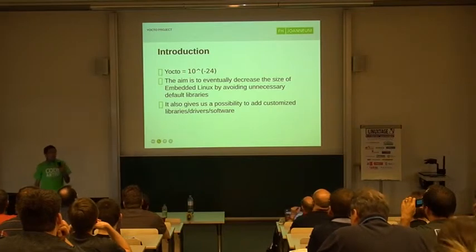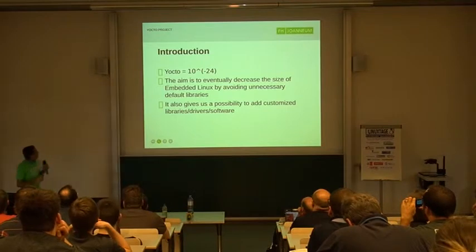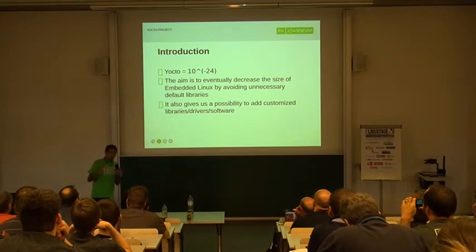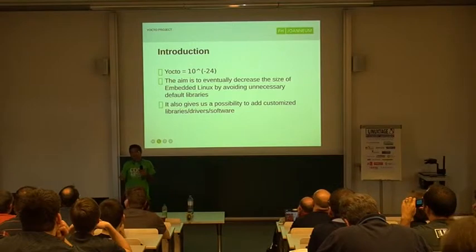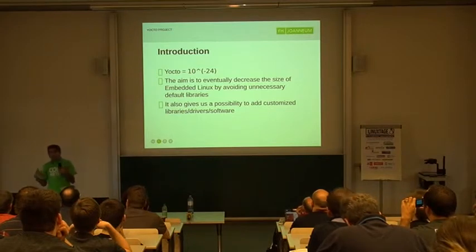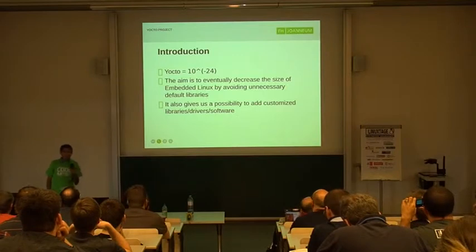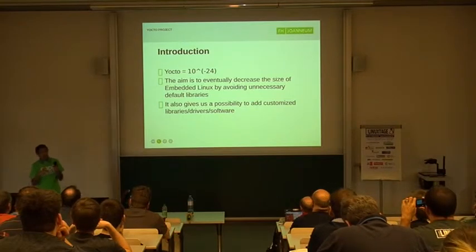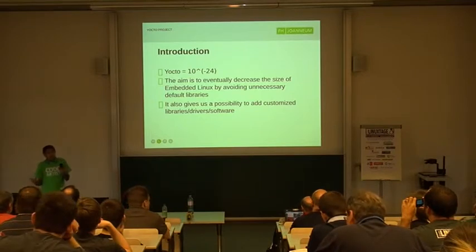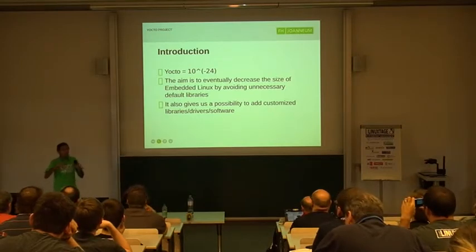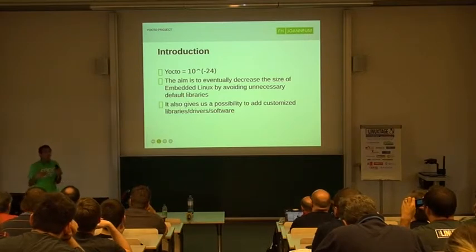The word 'Yocto' itself means 10 to the power of minus 24. The aim is to decrease the size of distributions. If you download a Raspberry Pi image from the internet, you get it at 680 MB. We don't use all the libraries in it. If you want to develop products specific to multimedia, you don't need other libraries — and those extra libraries can even give you security loopholes that can be exploited. The aim of the Yocto project is to decrease the size of the distribution you run on an embedded system.